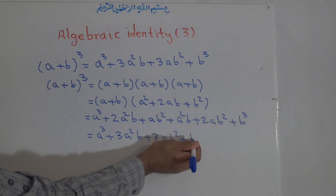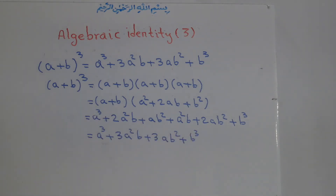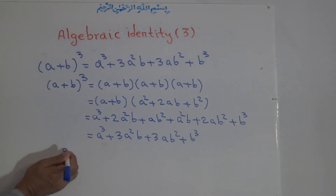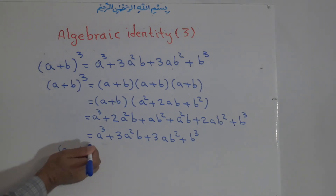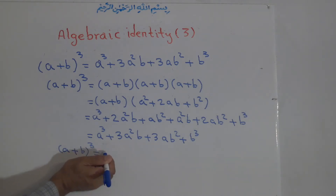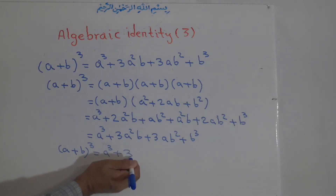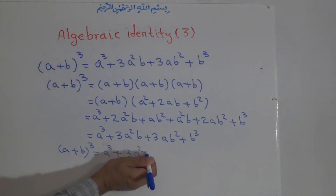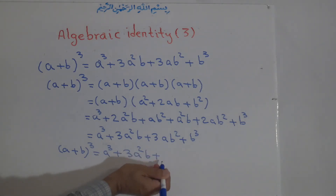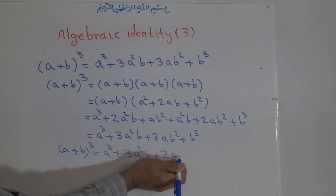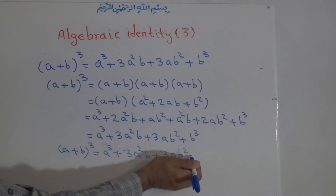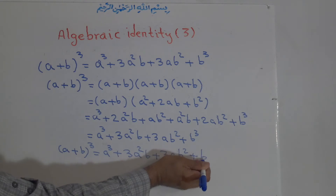Plus b to the power of 3. So from here we get the result that (a + b) to the power of 3 equals a cubed plus 3a squared b, plus 3ab squared, plus b cubed.